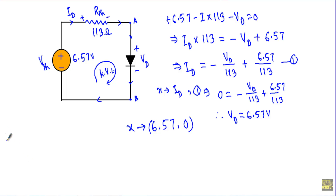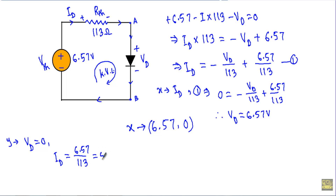To find the Y-intercept, set Vd = 0. From the load line equation: Id = 6.57/113 = 58.14 mA. So the load line intersects the y-axis at the point (0, 58.14 mA).